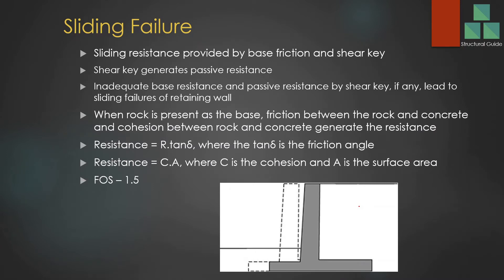Sliding failure, as the name implies, is the sliding movement of the retaining wall. This is also caused by the reasons mentioned previously. Sliding is prevented by the friction at the base and also by providing shear keys, which develop a passive pressure resistance when sliding is initiated.